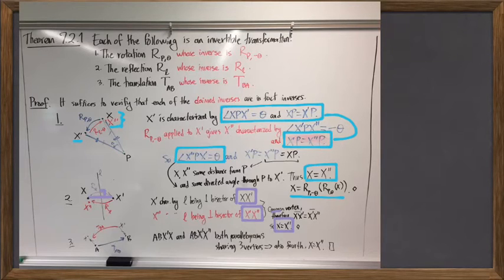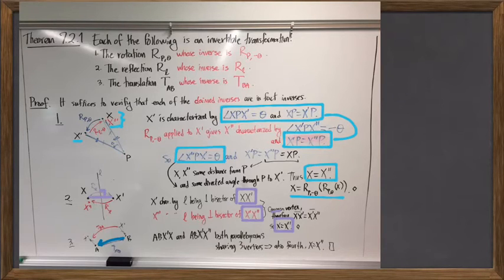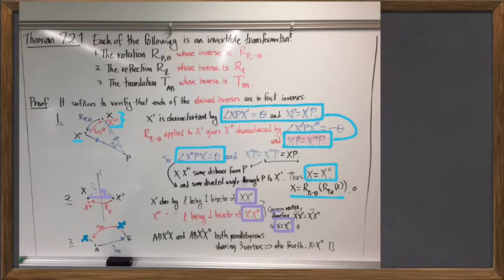For a translation, if it moves point A to point B, then to undo that translation, we use a translation that moves B back to A. What's important to remember is that an isometry doesn't just move those two points — it moves the entire plane. So the real question is: if moving A to B moves the entire plane in a certain way, why does moving B back to A return the entire plane to where it started? We make that argument using the original definition of a translation, which says the translation from A to B moves any point X to X′ — the same distance away from B as X was from A, with those segments parallel to one another, setting up a parallelogram.